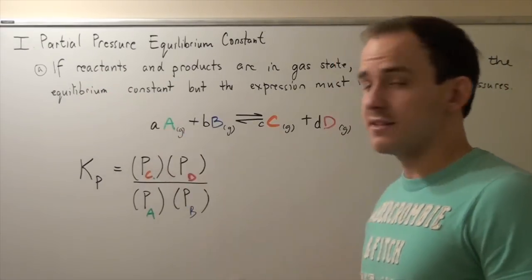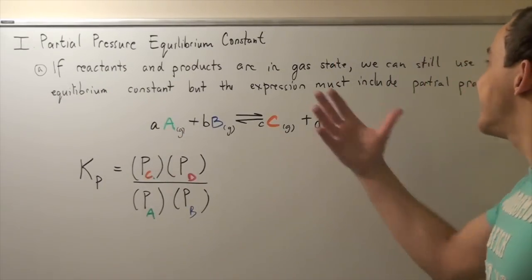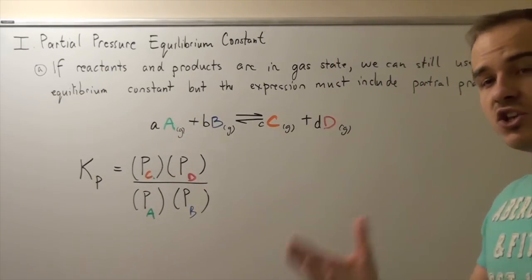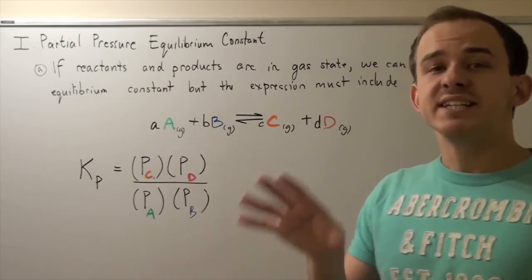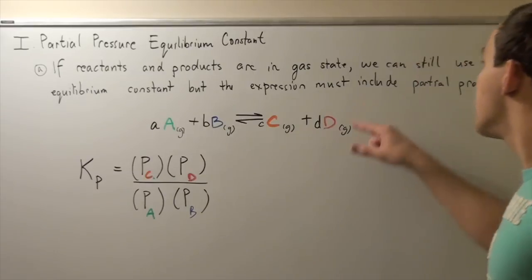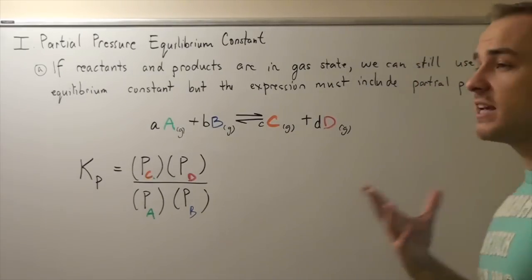If reactants and products are both in the gas state, we can still use the equilibrium constant and the expression for our equilibrium constant, but now we have to incorporate the partial pressures of our gases.